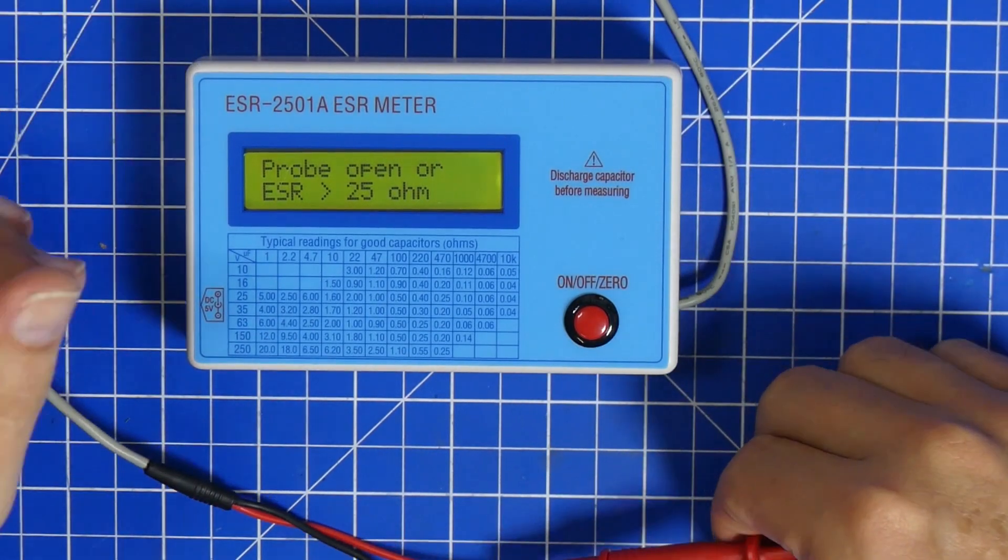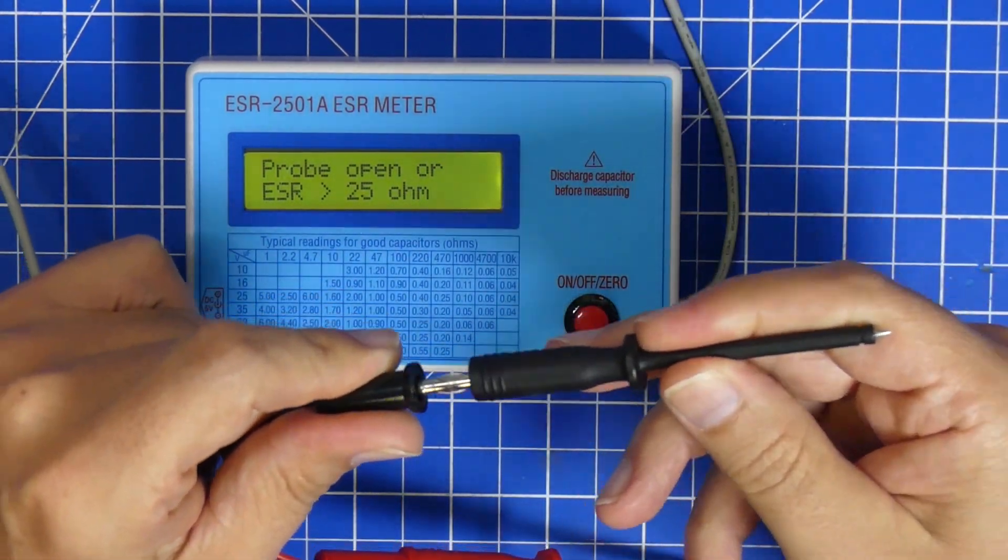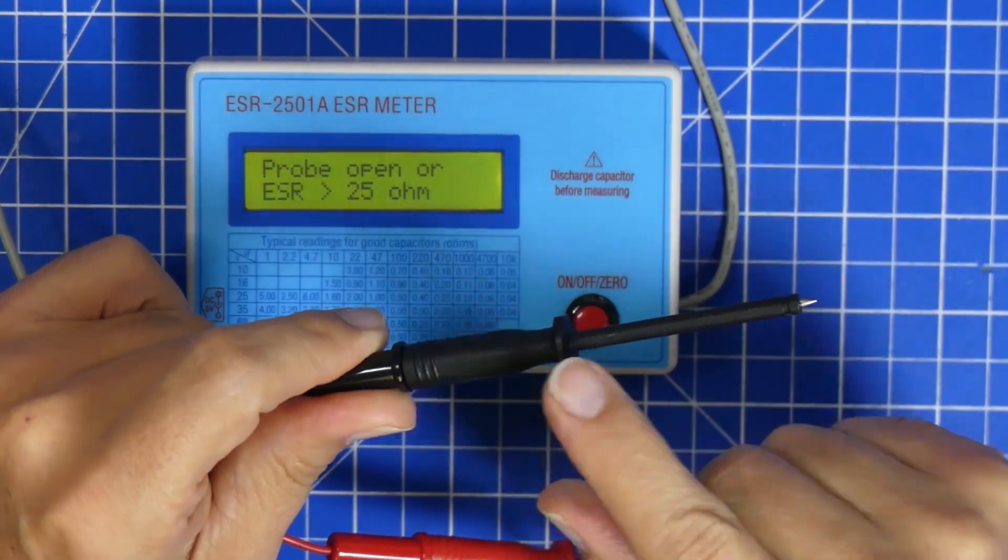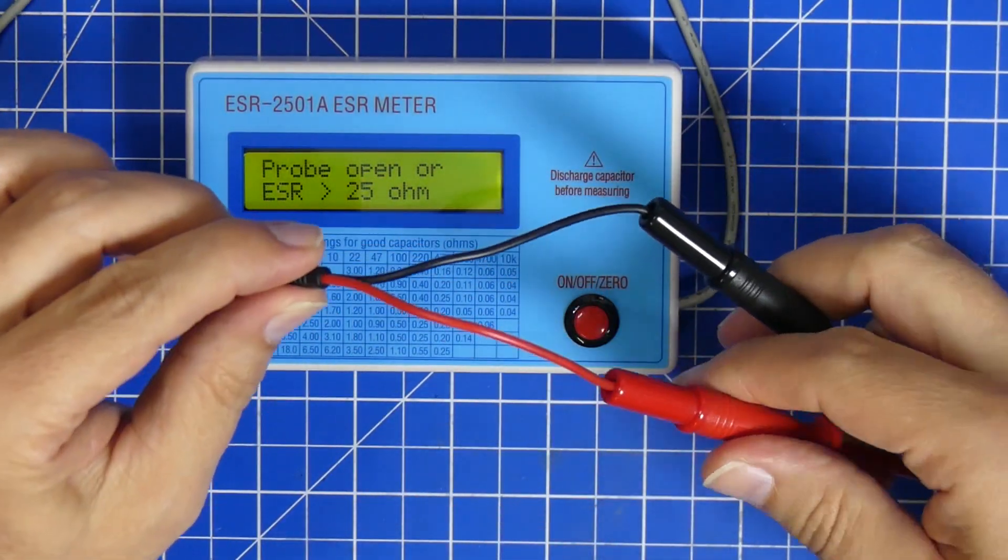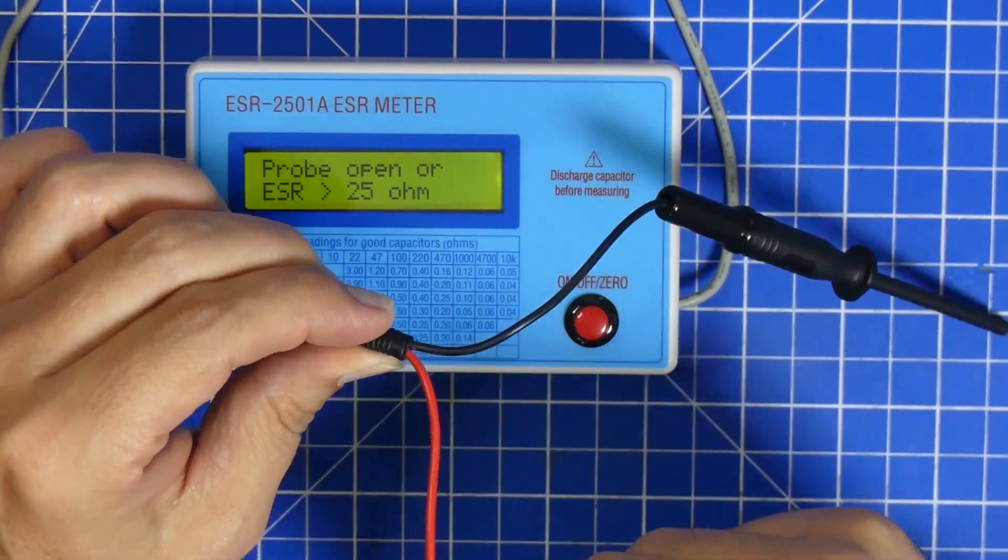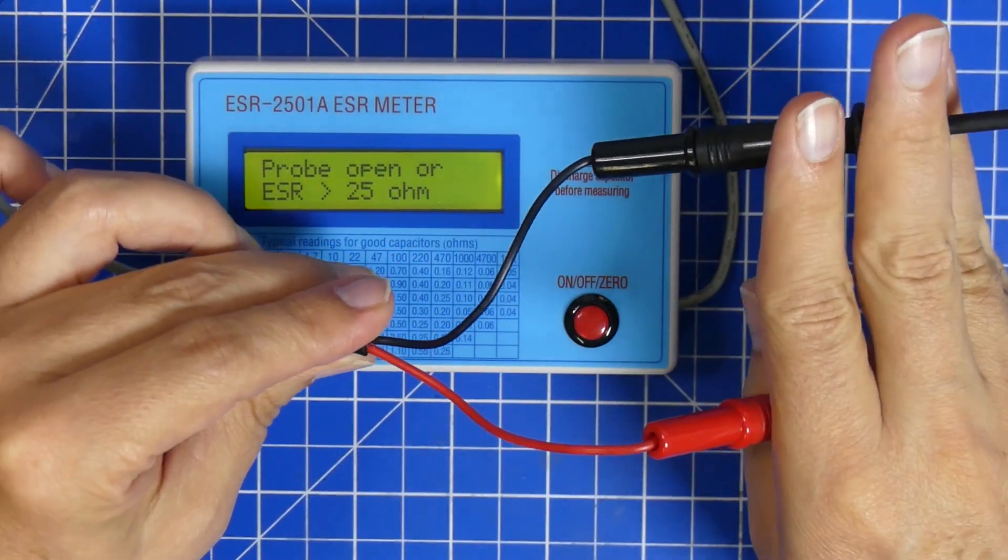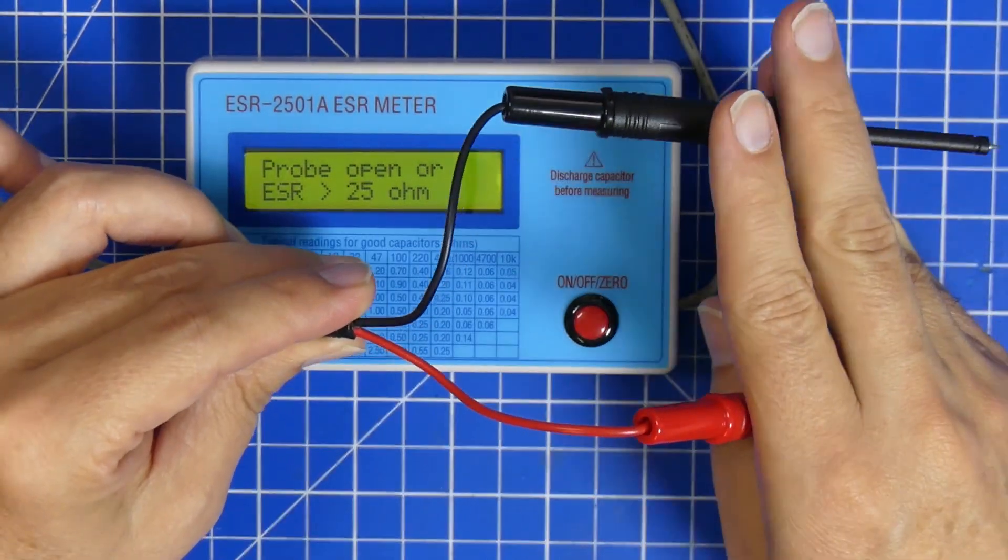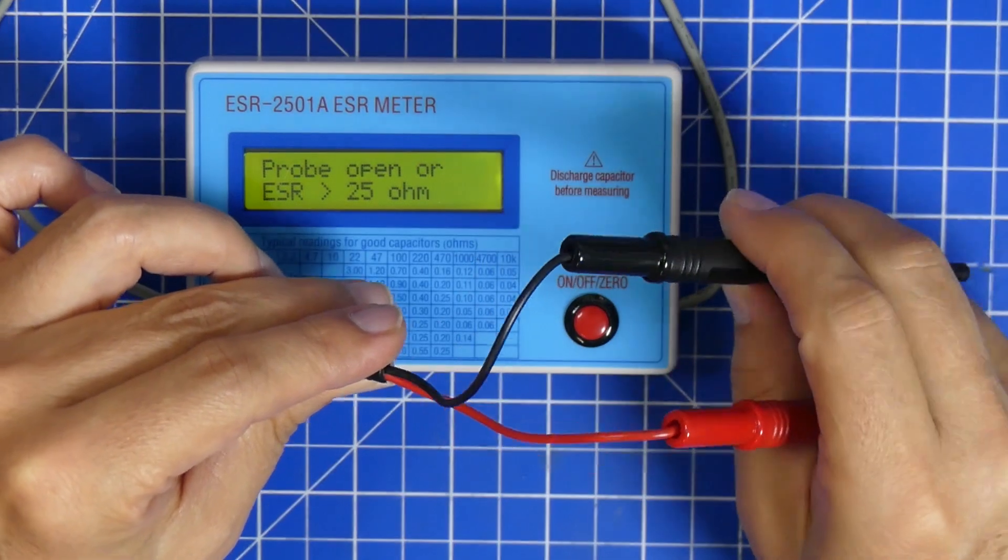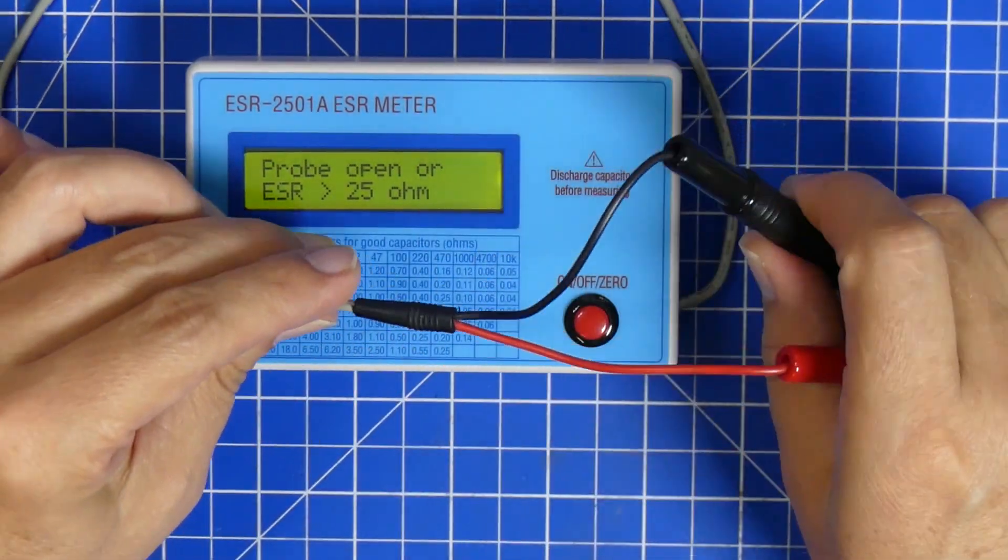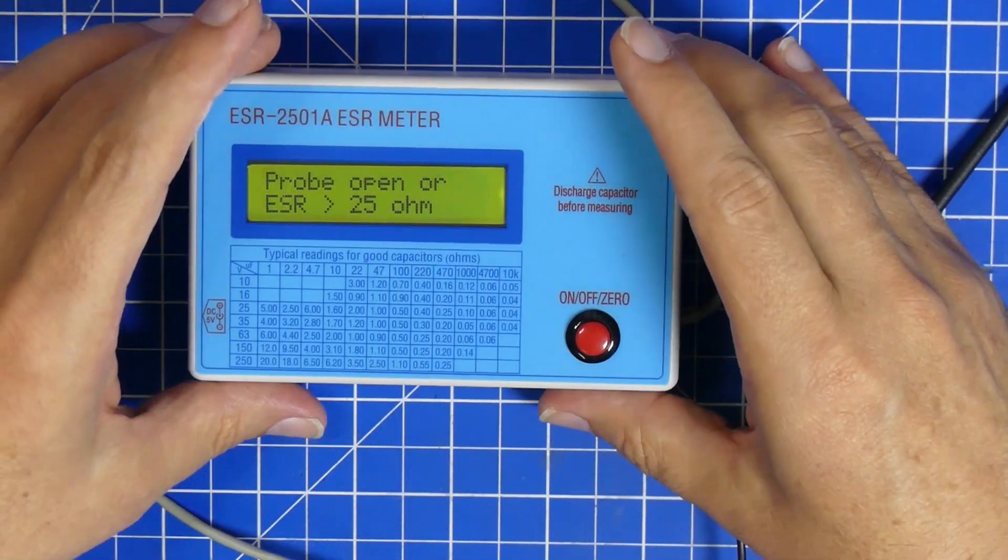I like that this one comes with detachable probes, so I can put other probes on that are at an angle. The only drawback is that the cable length to the probe is really super short, so sometimes it's kind of hard to get it to touch the capacitor you're measuring. But apart from that, this is just one of those tools that I love a lot.